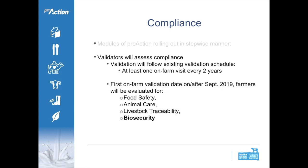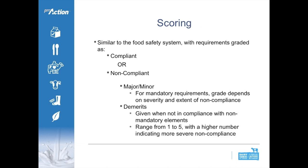On or after September 2019, farmers will be evaluated on food safety, animal care, livestock traceability, and biosecurity. Scoring is similar to the existing food safety system, with requirements graded as compliant or non-compliant. For non-compliance, there are two major categories: mandatory requirements graded as major or minor depending on severity, and demerits ranging from one to five given for non-compliance with non-mandatory elements, where a higher number indicates more severe non-compliance.